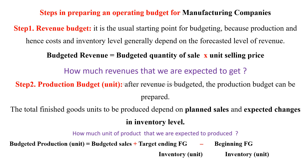The budgeted production units formula is: target finished goods inventory at the end of the period, minus beginning finished goods inventory. This gives us the net units we need to produce beyond what is already in stock.